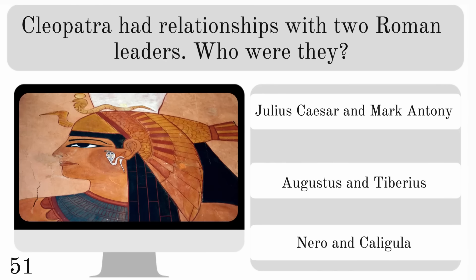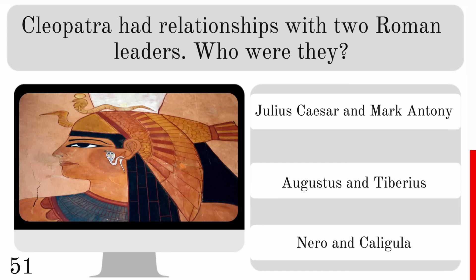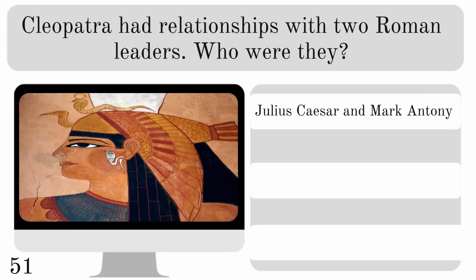Cleopatra had relationships with two Roman leaders. Who were they? Julius Caesar and Mark Antony, Augustus and Tiberius, or Nero and Caligula? The correct choice is Julius Caesar and Mark Antony.